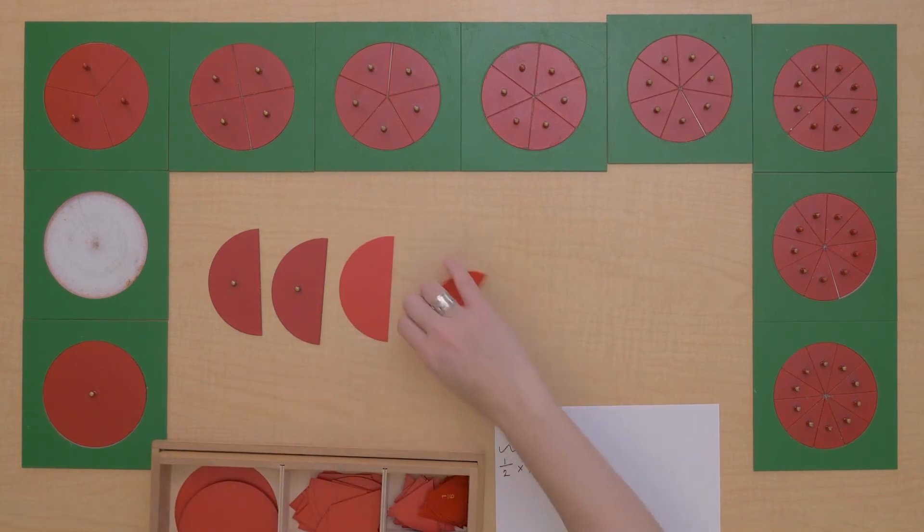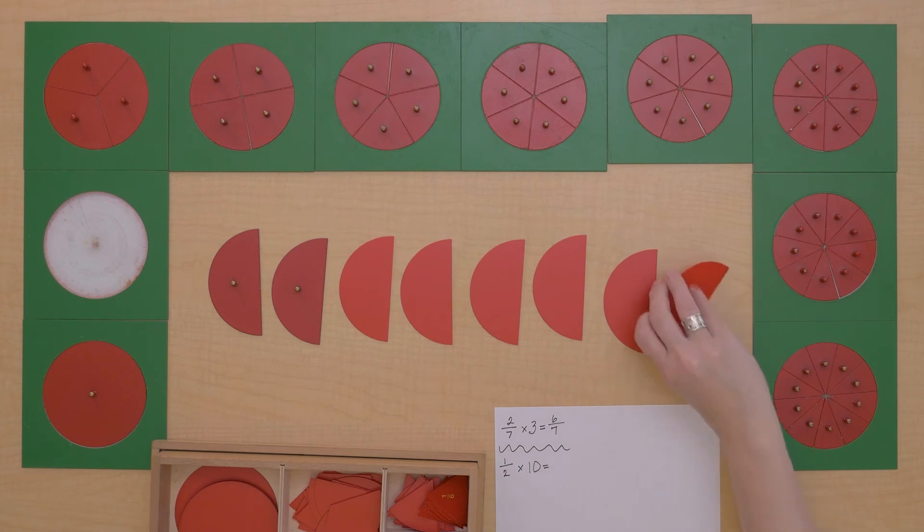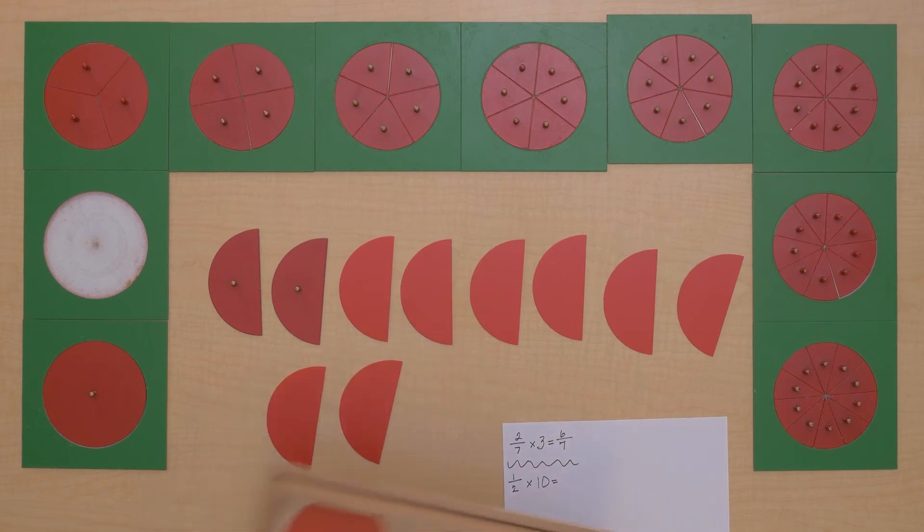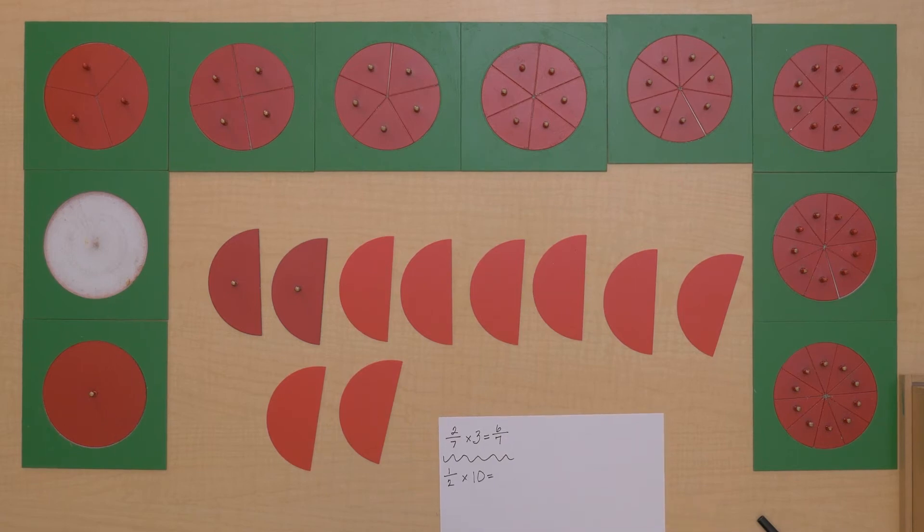3 times, 4 times, 5 times, 6 times, 7, 8, 9, 10 times. All right. So I can see that we have 10 halves.